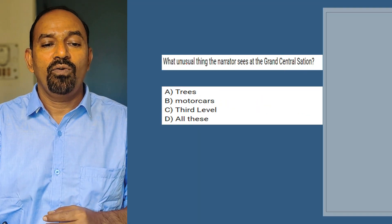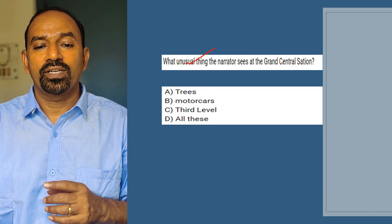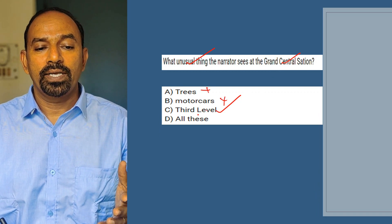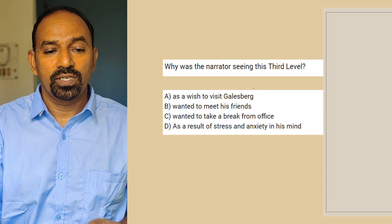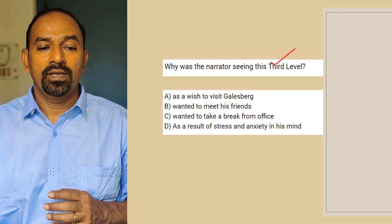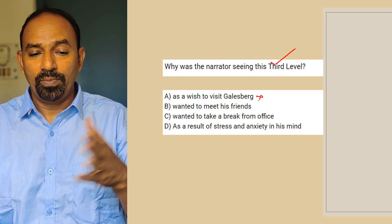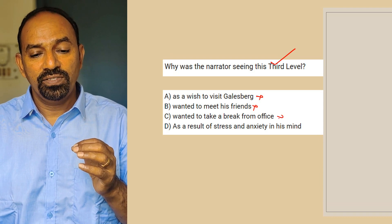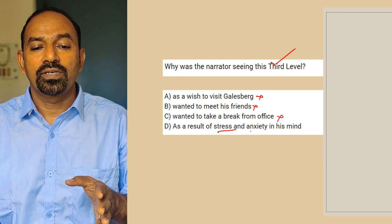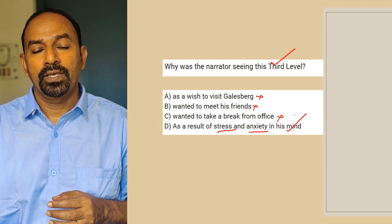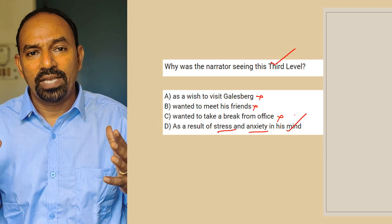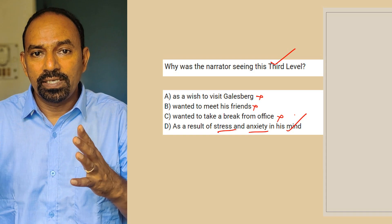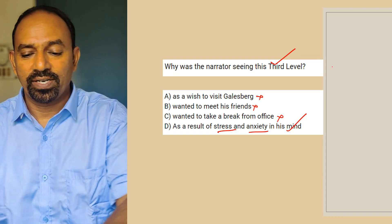Next question: What unusual thing does the narrator see at Grand Central Station? He sees a third level there — not trees or motor cars, but a third level. Next question: Why was the narrator seeing the third level? It was as a result of stress and anxiety in his mind. Due to the stressful life and anxiety in him, he was able to see the third level at Grand Central Station.